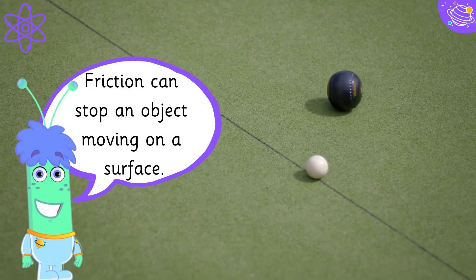There is a force between the moving object and the surface called friction. Friction can stop an object moving on a surface. How quickly this happens depends on how rough the surface is.